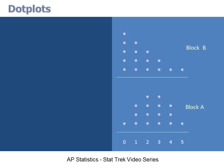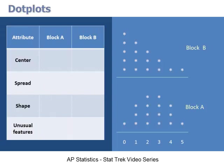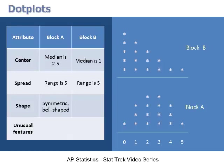These dot plots compare pet ownership on two city blocks, Block A and Block B. Each dot represents a family that lives on the block. To compare pet owners on Block A with Block B, we focus on center, spread, shape, and unusual features. We see immediately that pet ownership is greater on Block A. Median pet ownership on Block A is two and a half pets versus one pet on Block B. The range of pet ownership is the same on both blocks, but the shape is very different — Block A is bell-shaped and Block B is skewed right. Neither data set has unusual features like gaps or outliers.